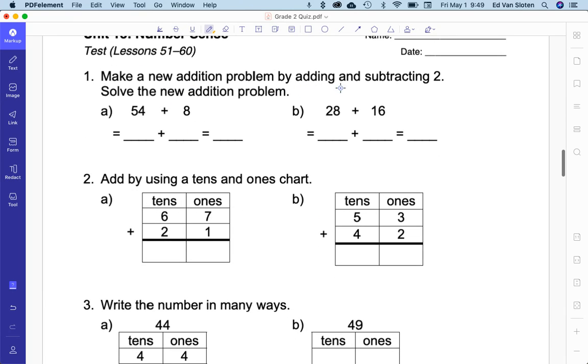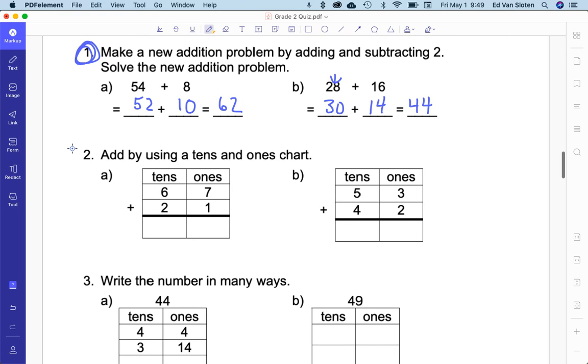Make a new addition problem by adding and subtracting 2. Solve the new addition problem. Here's what I'm going to do. I'm going to make that 8 into a 10. So, I add 2 to that. I'm going to take away 2 from here. And I'm going to get 52 plus 10 is 62. This is actually something I do. But it took a lot of years of practice. It's not grade 2 stuff. I'm going to add 2 to the 28, that means I'm going to take away 2 from the 16, and I'm going to get the answer 44. This is a tricky way of doing things. If you don't understand it yet, that's okay. You will understand it if you just keep practicing.